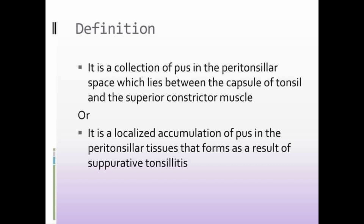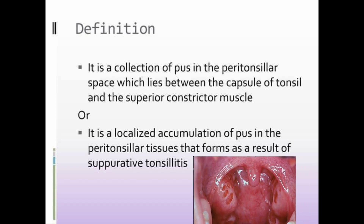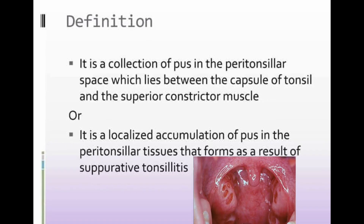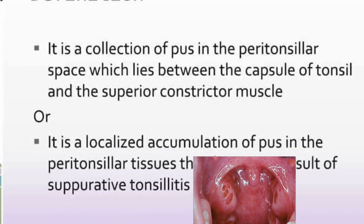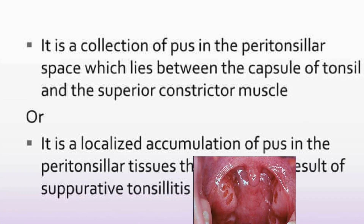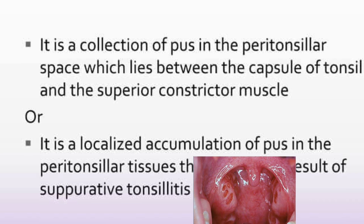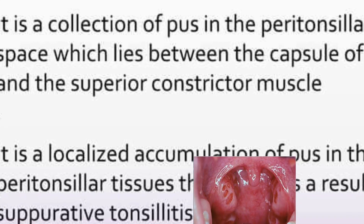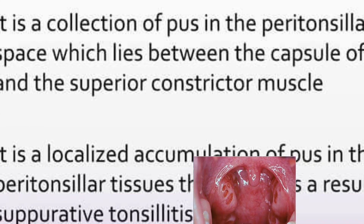This abscess is collected within the peritonsillar space, which lies between the capsule of the tonsil and the superior constrictor muscle, or a localized collection of pus in the peritonsillar tissue that forms as a result of suppurative tonsillitis.